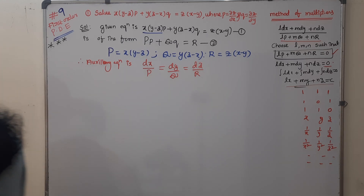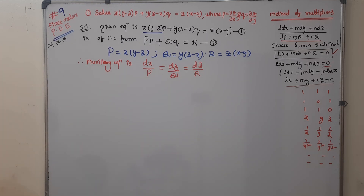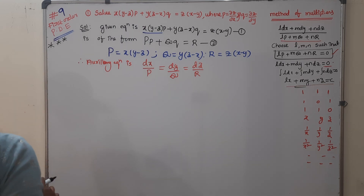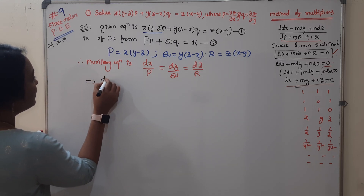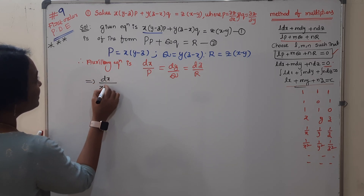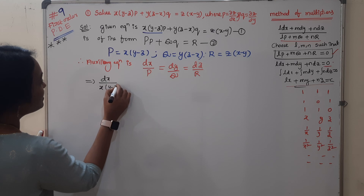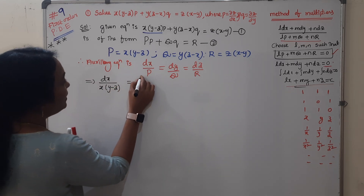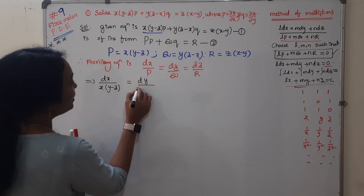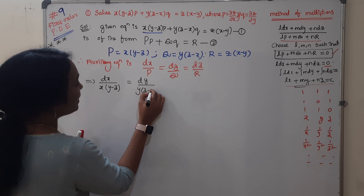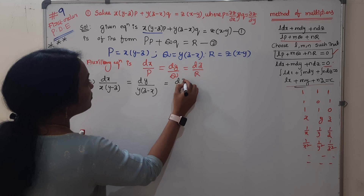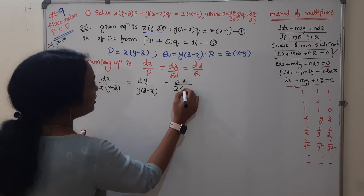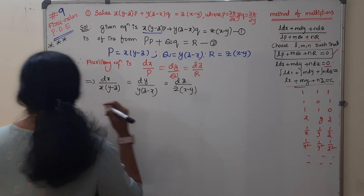Setting up the auxiliary equation: dx divided by capital P, which is x(y − z), equals dy divided by y(z − x), equals dz divided by z(x − y).